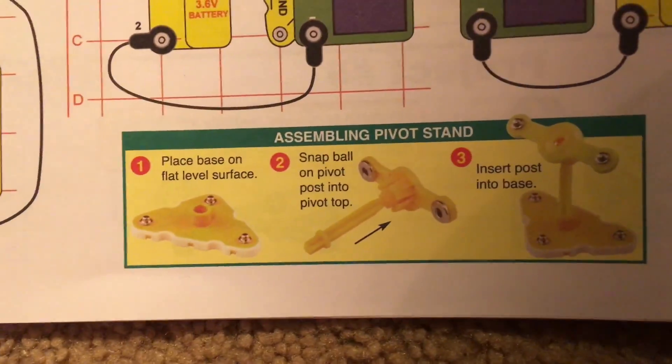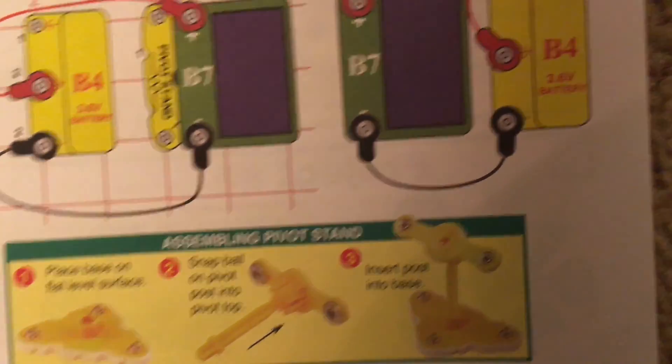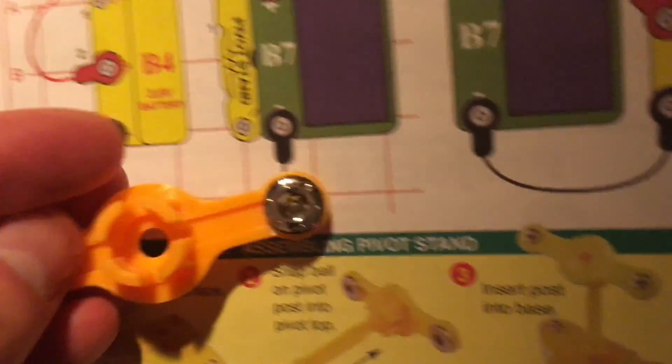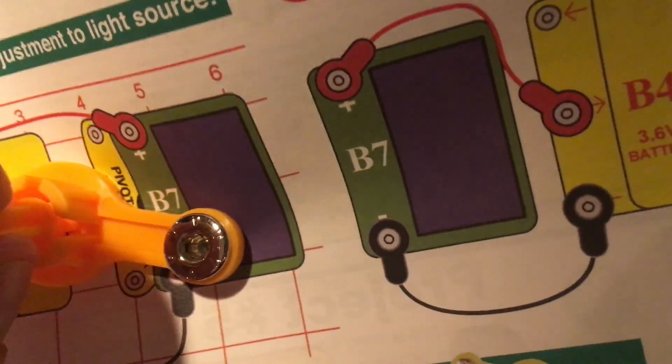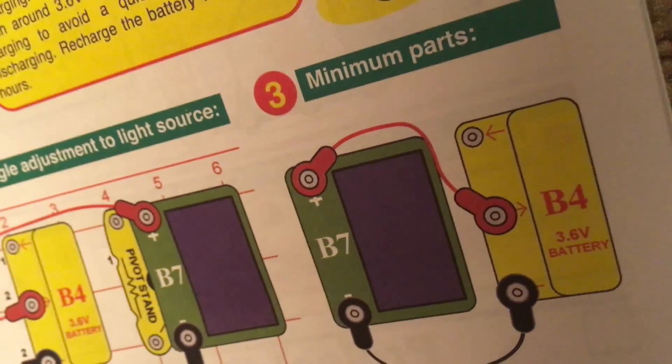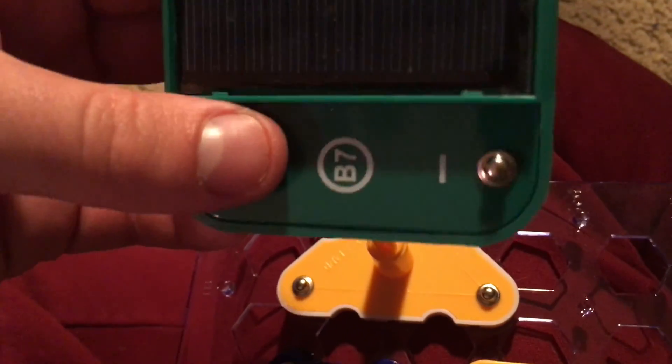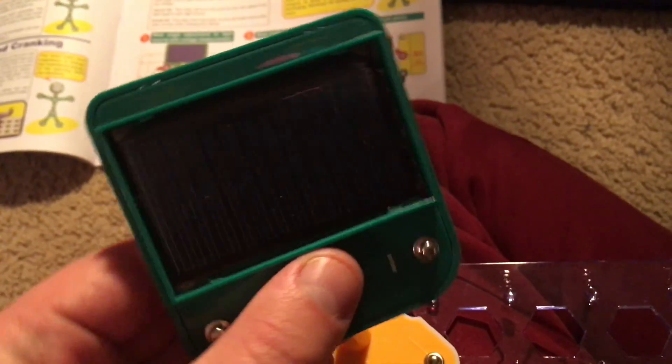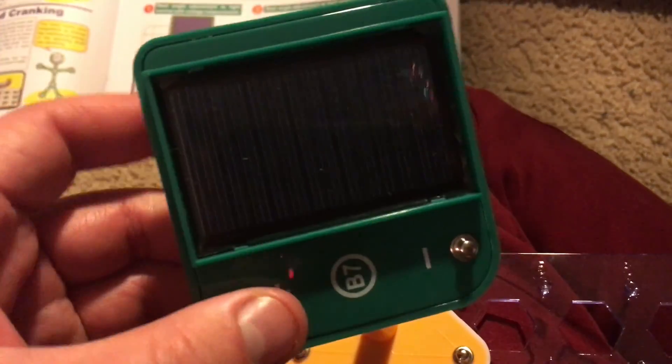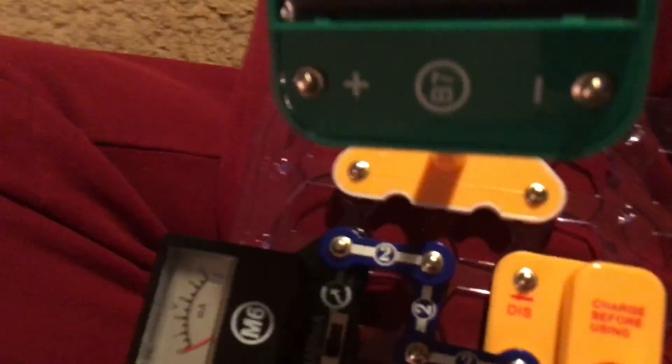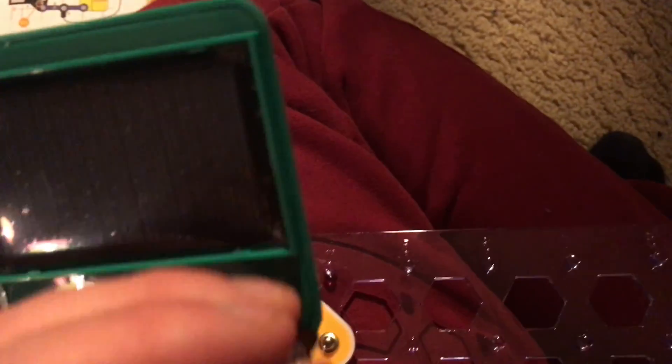I am going to show you how you can assemble the pivot stand. First we mount the ball onto the pivot post and place it onto the base. And then we will mount the solar cell onto the pivot stand like that and now you can adjust it, you can tilt it backward or forward or swivel it left or right. And then we will hook up the black jumper wire to the negative terminal on the solar cell and the red jumper wire to the positive terminal.